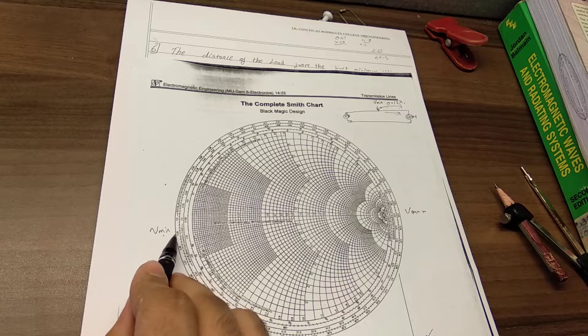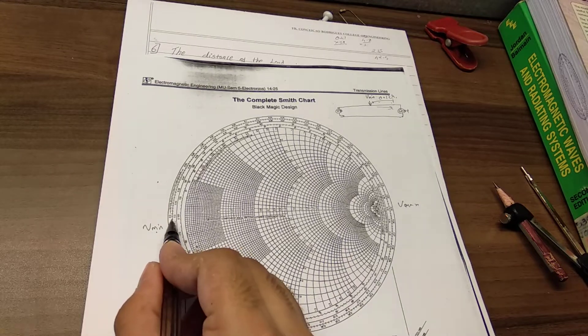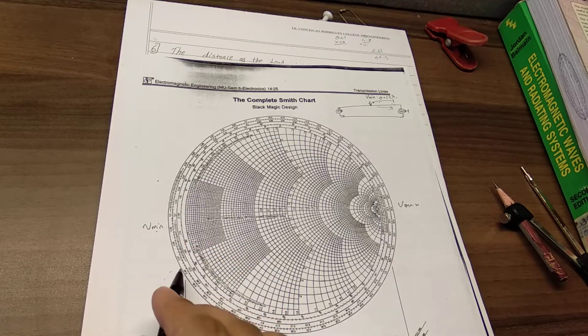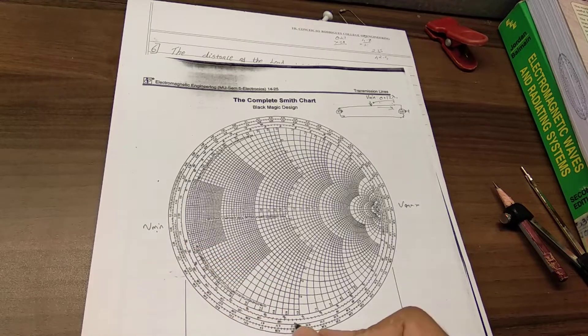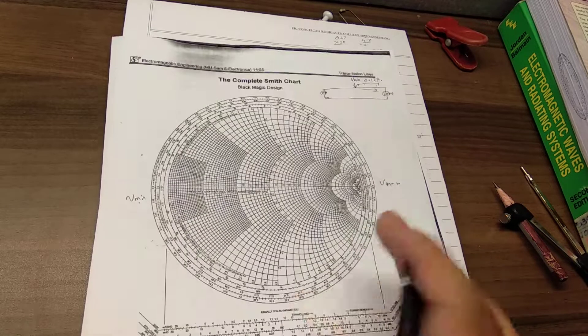So this is, if you won't be able to see, but this is towards the load, wavelengths towards the load, and this is 0.0. So now we just add 0.12 to it and then we get somewhere over here.